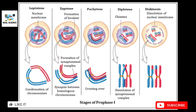In diakinesis, the dissolution of the synaptonemal complex is completed and the parts of sister chromatids of homologous chromosomes are totally exchanged. As you can see in the diagram, the blue chromosome's sister chromatids have a red color patch, while the red chromosome's sister chromatids have a part of the blue chromosome — showing the result of crossing over.